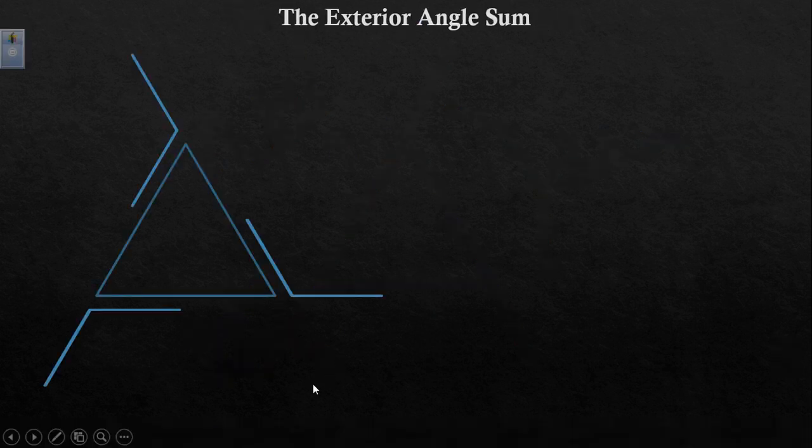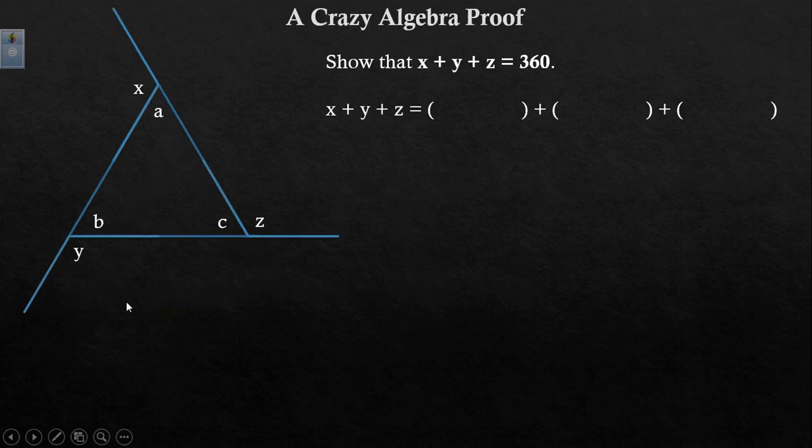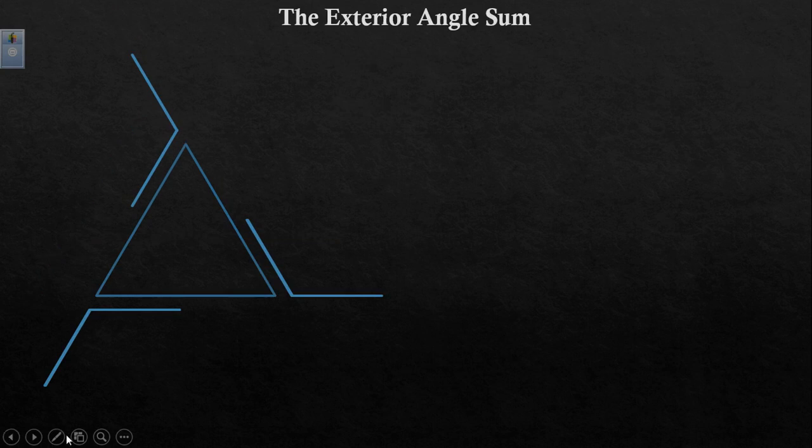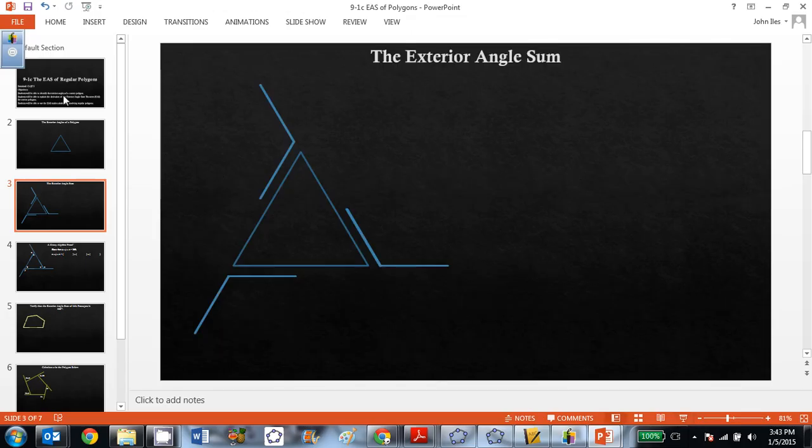Alright, so how does the exterior angle sum work? What you see here is three exterior angles of the polygon that have been kind of peeled off of the shape. I need to back that up. I don't think I have just an editor tool. So I'm going to go ahead and press escape here.